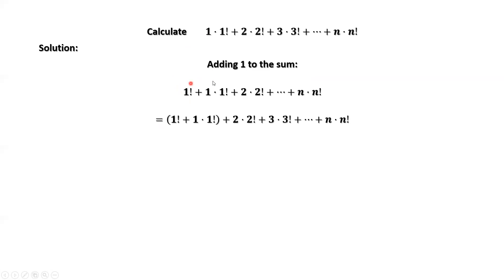We group the first two terms. 1 factorial plus 1 times 1 factorial equals 2 times 1 factorial. What is 2 times 1 factorial? It is 2 factorial.